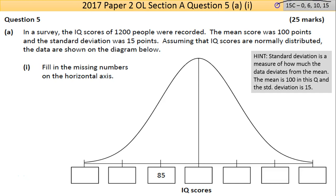Part A here is worth a lot of marks. In a survey, the IQ scores of 1,200 people were recorded. The mean score was 100 points and the standard deviation was 15 points. Assuming that IQ scores are normally distributed, part (i) says fill in the missing numbers on the horizontal axis. Standard deviation is a measure of how much the data deviates from the mean. So we have our mean of 100, and the standard deviation is 15.